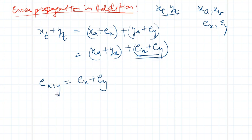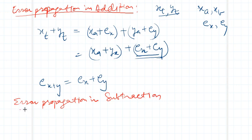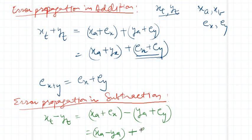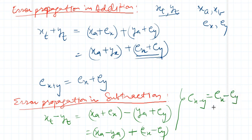Similarly, error propagation in subtraction: the same thing happens. x_t minus y_t can be written as (x_a plus e_x) minus (y_a plus e_y), which equals (x_a minus y_a) plus (e_x minus e_y). So the error in subtraction, e_{x-y}, is simply e_x minus e_y. That is the total error and how it propagates.